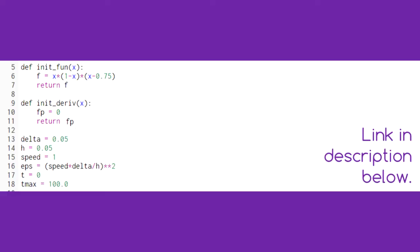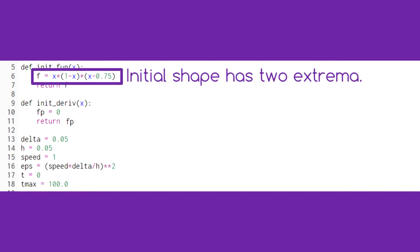In this code, which is available in a link in the description below, we model a vibrating guitar string. We start with the initial shape of the guitar string and the first derivative of the shape function. In this case, we're releasing the string from rest.